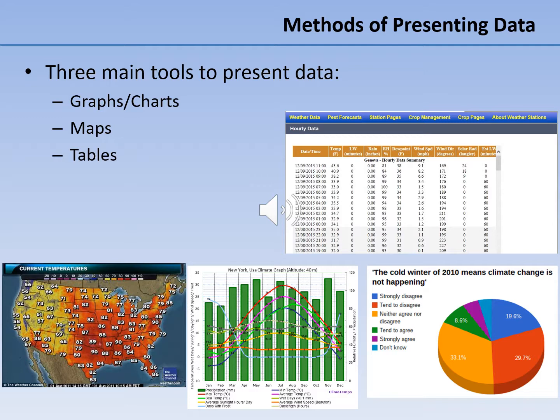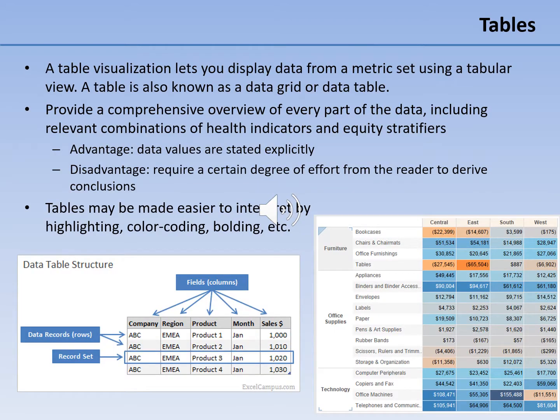Graphs are a visual representation of the relationship between variables. A chart is a graphical representation of data in which the data is represented by symbols such as bars in a bar chart, lines in a line graph, or slices in a pie chart. A table visualization lets you display data from a metric set using a tabular view, also known as a data grid or data table. Tables provide comprehensive overviews of every part of the data, including relevant combinations of health indicators and equity stratifiers. One advantage to tables is that the values are stated explicitly.